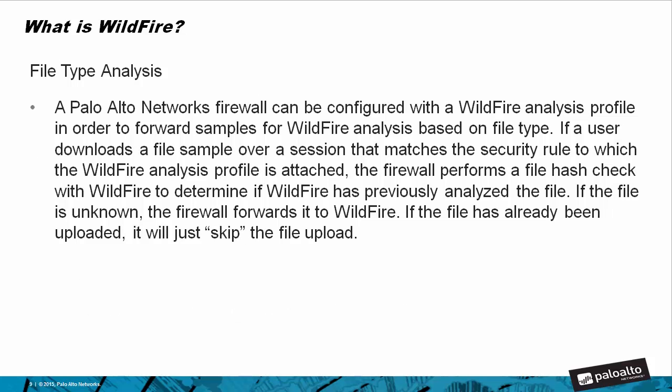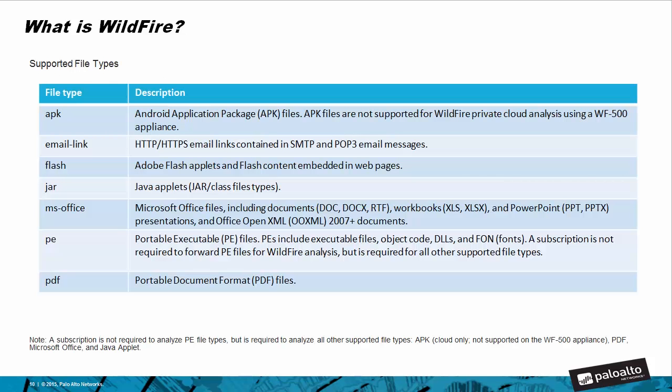Next is file type analysis. A Palo Alto Networks firewall can be configured with a WildFire analysis profile in order to forward samples for WildFire analysis based on the file type. If the user downloads a file sample over a session that matches a security rule to which the WildFire analysis profile is attached, the firewall performs a file hash check with WildFire to determine if WildFire has previously analyzed the file. If the file is unknown, the firewall forwards it to WildFire. If the file has already been uploaded, it will skip the file and show that in the logs.